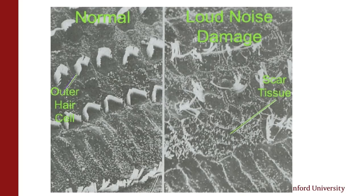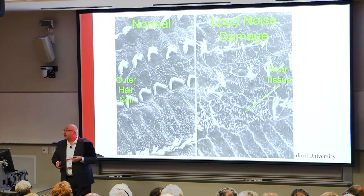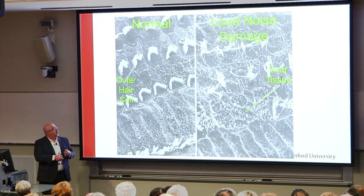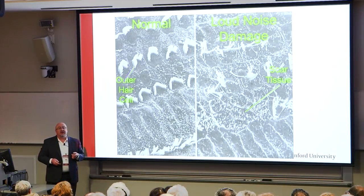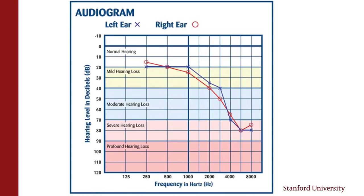Eventually scar tissue builds up. This scenario happens with excessive noise exposure, as we get older, and with certain forms of genetic deafness where these cells basically just do not function anymore. When that happens and you say, 'Gosh, I'm having some trouble hearing,' then you end up coming to see somebody like me. Every day my team of audiologists tests hearing — that's a big part, one part of what we do.